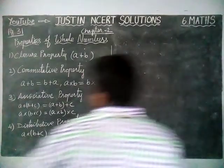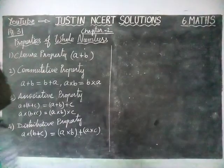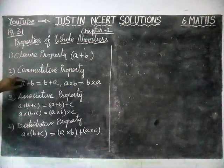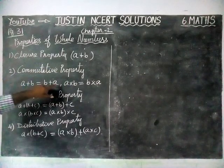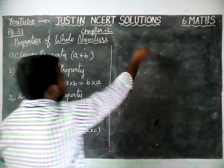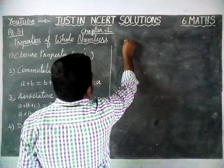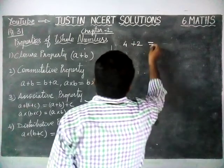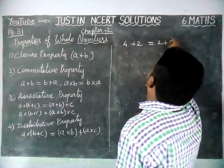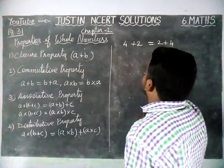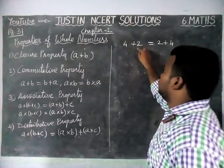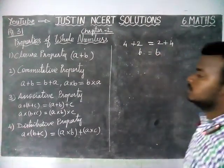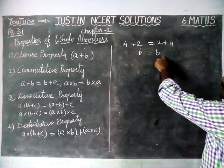Next, we are going to check the commutative property. If the commutative property is satisfied, A plus B should be equal to B plus A. We will take the numbers 4 and 2. 4 plus 2 is equal to 6 and 2 plus 4 is equal to 6. So the left hand side is equal to the right hand side.